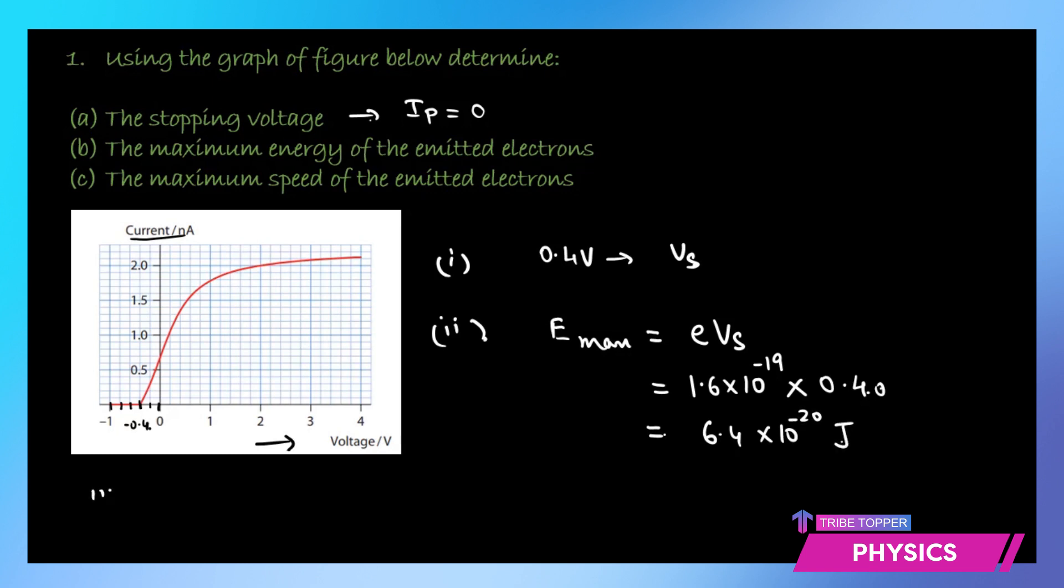The third part asks what is the maximum speed of the emitted electrons? Maximum speed: kinetic energy half MV square is equal to Emax. Therefore V will be equal to square root of 2 times Emax upon M. We plug in the values: 2 times 6.4 times 10 to the power negative 20 upon 9.1 times 10 to the power minus 31, which is mass of an electron. Solving this we get 3.8 times 10 to the power 5 meters per second.